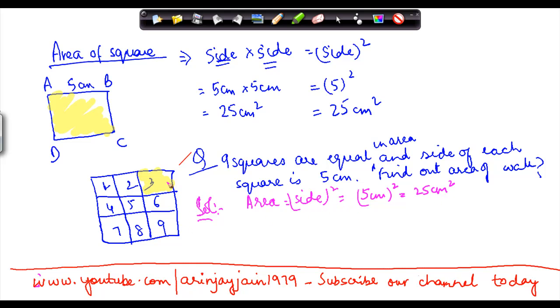Now we know that there are in all 9 squares and the area of each of these squares is equal. Area of wall therefore is equal to 9 times area of square. Why? Because we know that area of each of these squares is equal.